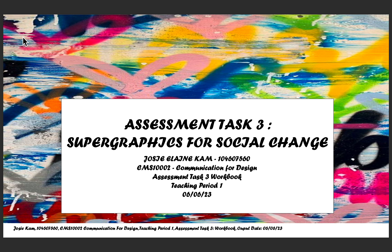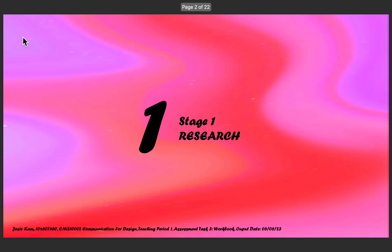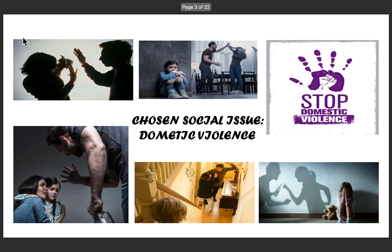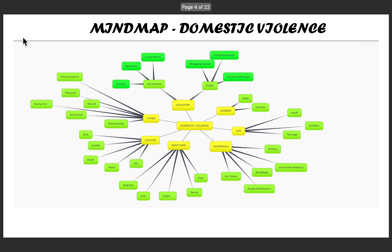Hi, my name is Josie and today I will be presenting my third assessment task: the super graphics for social change. For the first stage of the design process, the research stage, I had to choose a social issue. The social issue I chose was domestic violence, as it is an issue that is close with me.